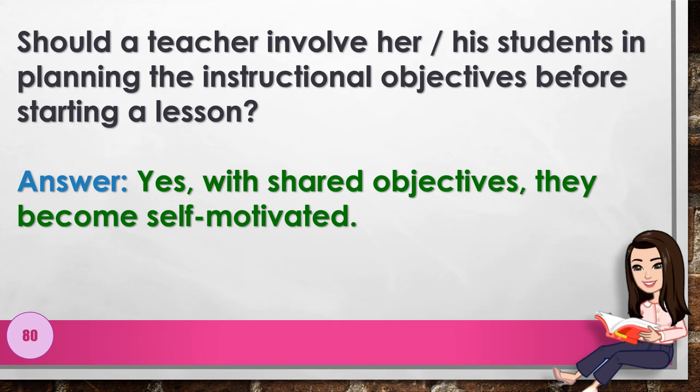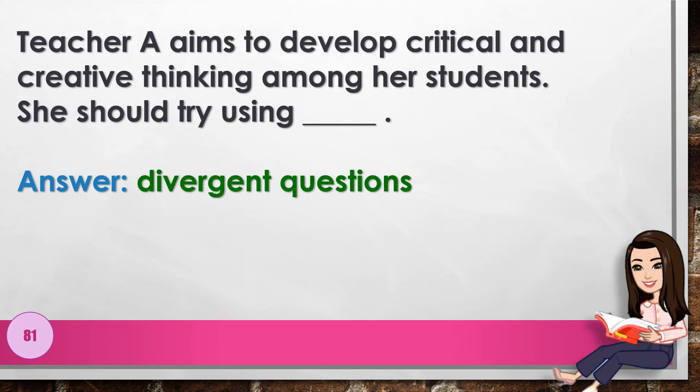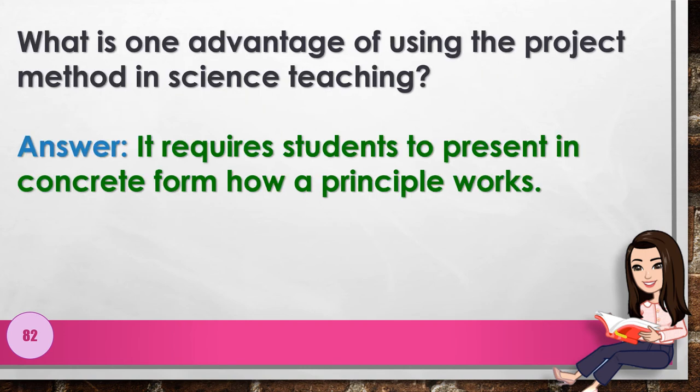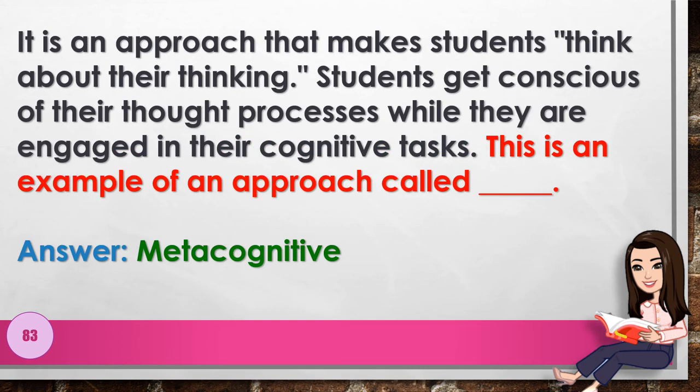Number 81: Teacher A aims to develop critical and creative thinking among her students. She should try using blank. Answer: divergent questions. Number 82: What is one advantage of using the project method in science teaching? Answer: it requires students to present in concrete form how a principle works. Number 83: It is an approach that makes students think about their thinking; students get conscious of their thought processes while engaged in cognitive tasks. This is called blank. Answer: metacognitive.